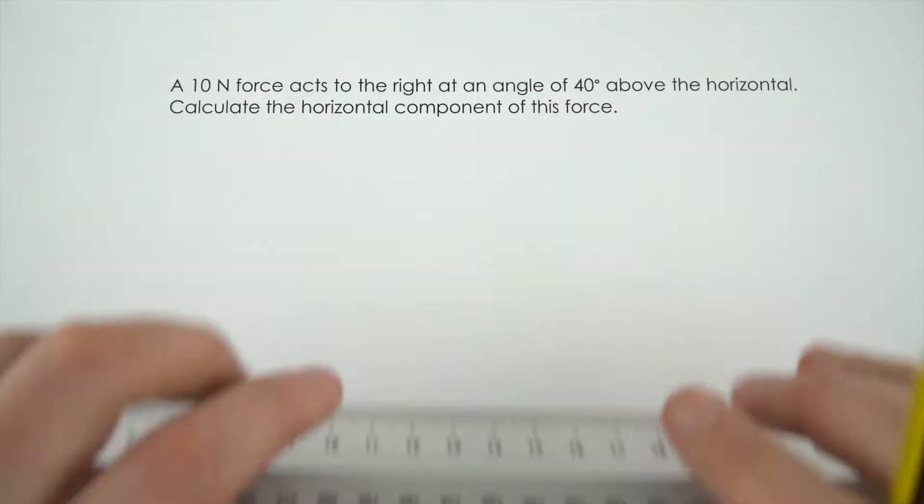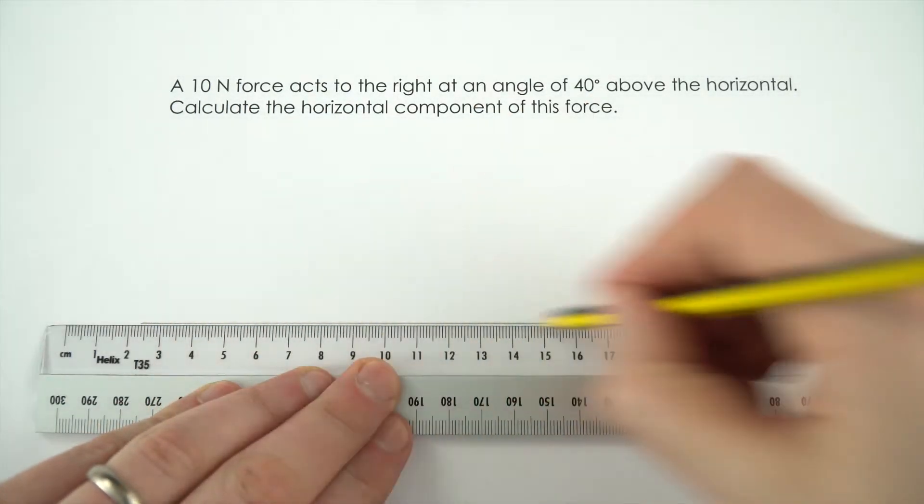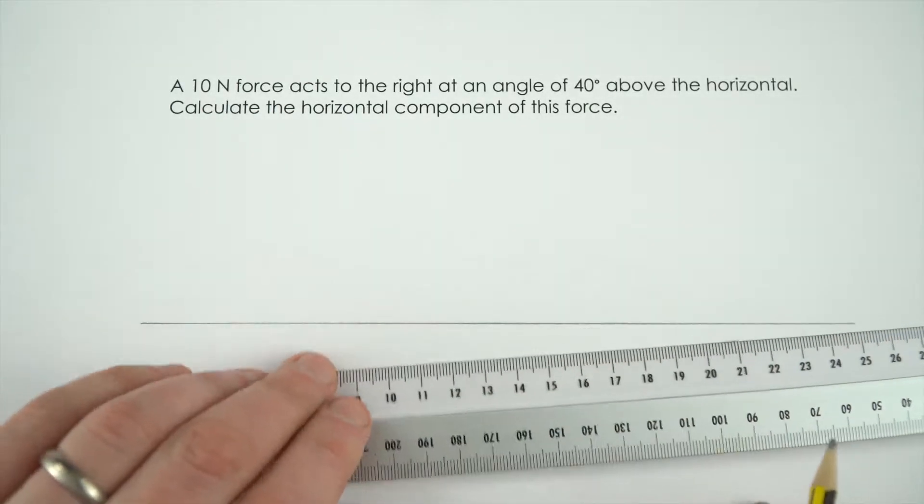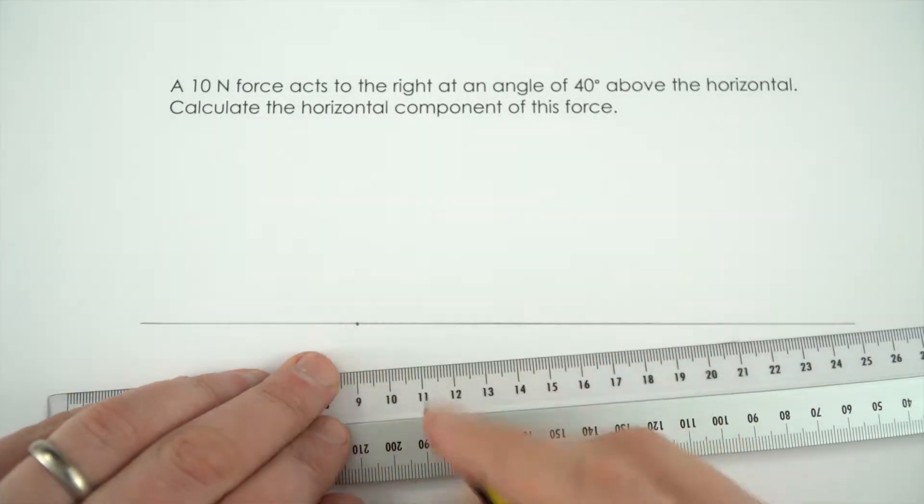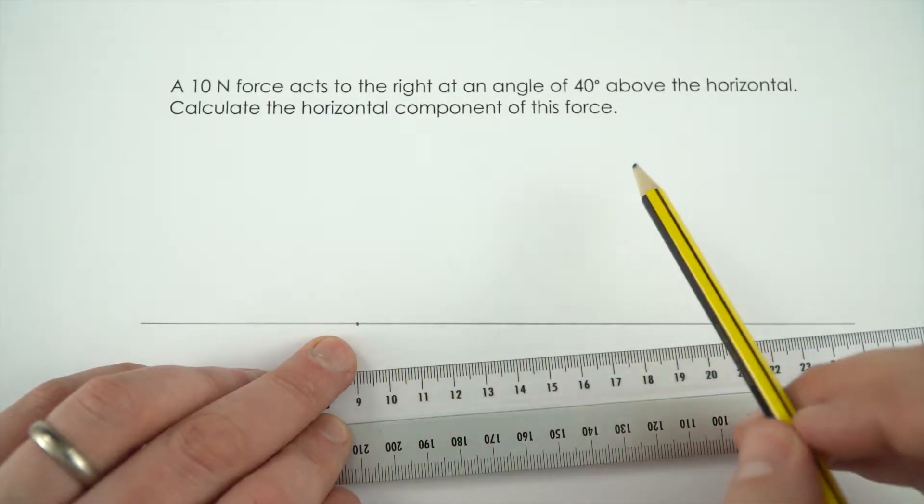So the first thing I'm going to do is draw a diagram in pencil. This line across here is going to be my horizontal line. I'm going to start at this point here and it says that we've got a 10 Newton force acting to the right at an angle of 40 degrees.